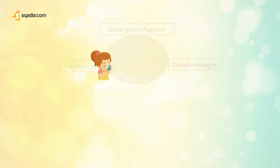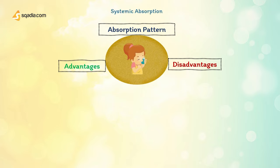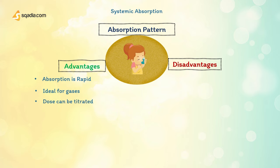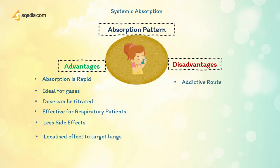The inhalation route has systemic absorption, which is not always desirable. Advantages include rapid absorption and immediate effects, it is ideal for gases, and effective for patients with respiratory problems. Doses can be titrated, and it produces localized effects targeting the lungs, meaning lower doses are used compared to oral or parenteral administration, with fewer systemic side effects. Disadvantages include addiction problems as drug can enter the brain quickly, patients may have difficulty regulating the dose, and some patients may have difficulty using an inhaler.